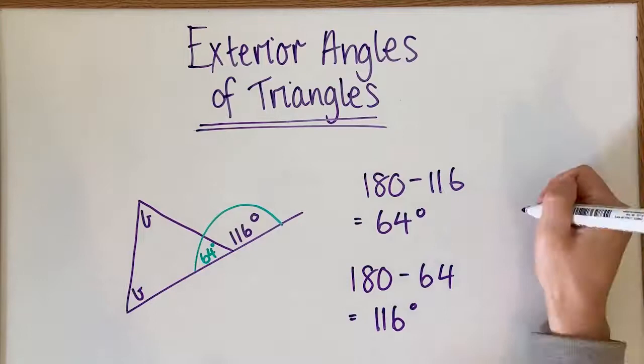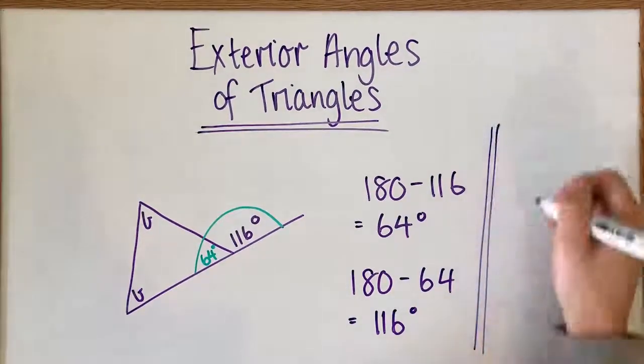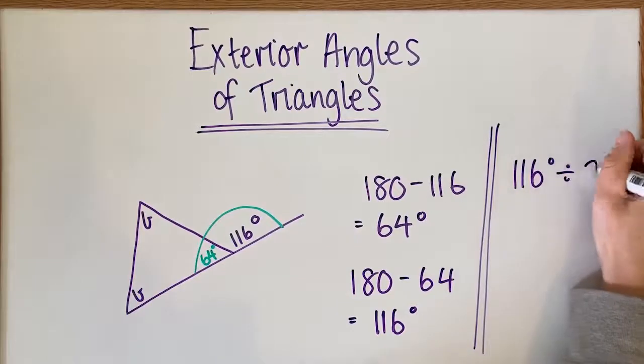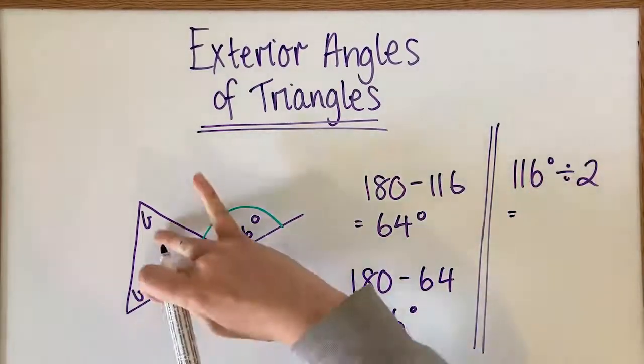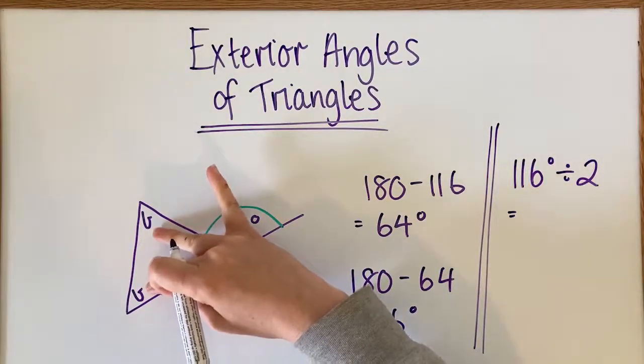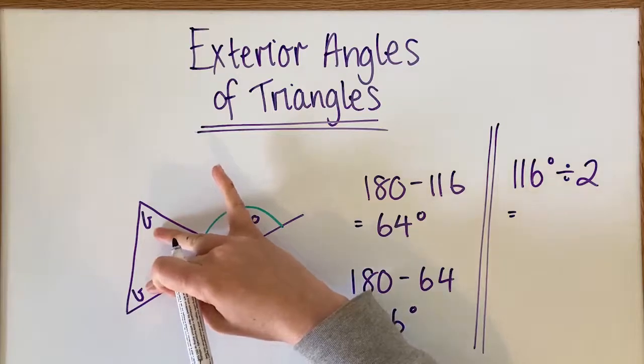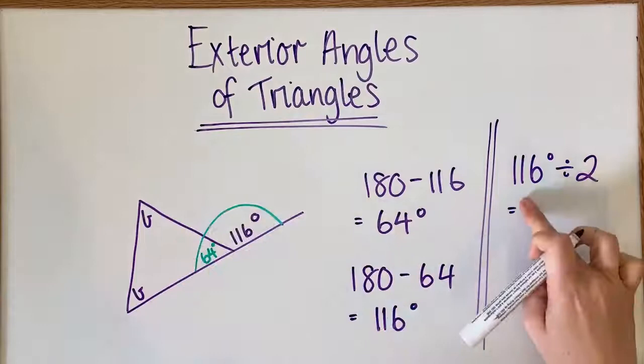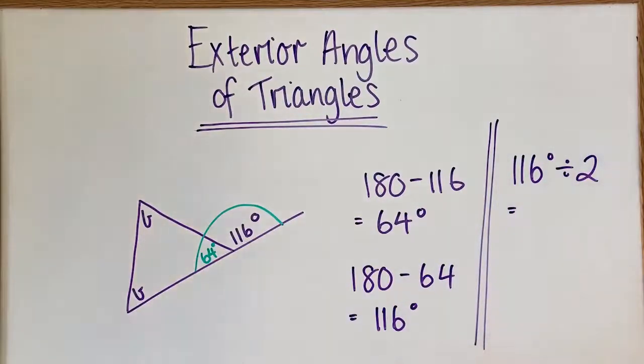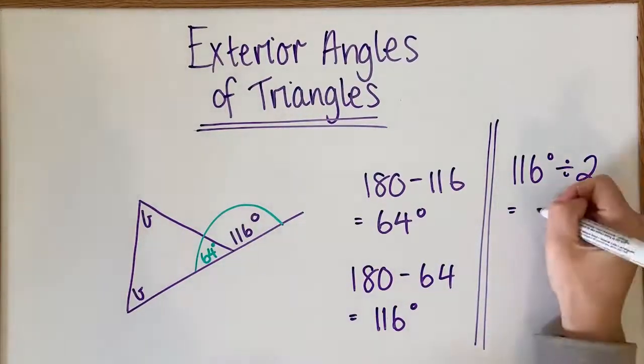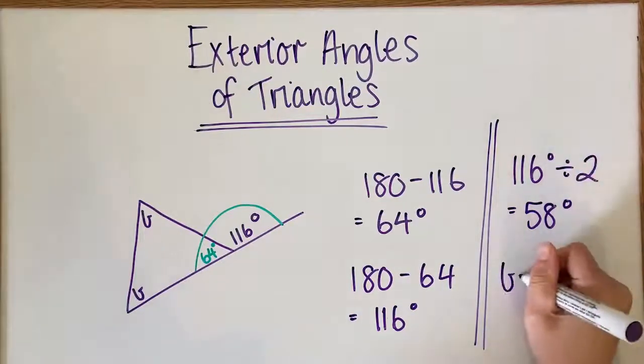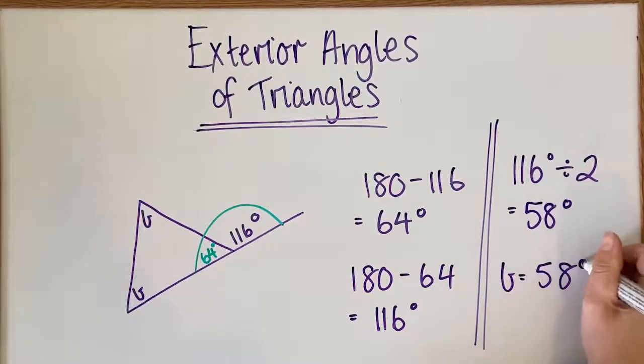Really what I could have done to start off with is just gone 116 degrees divided by 2. I'm dividing it by 2 because together these are 116, and I know that they're both exactly the same because they've both got the same letter. So 116, if we halve that, then we're going to get 58 degrees. That means that B equals 58 degrees.